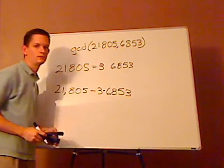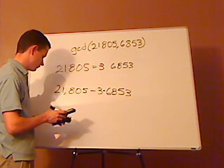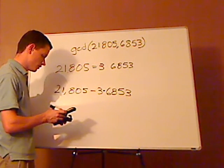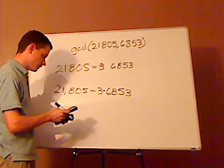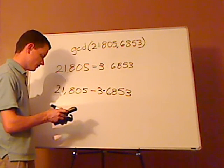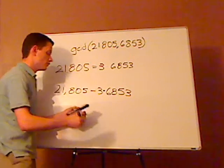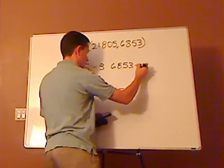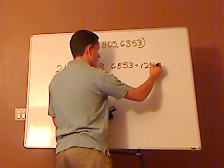So you type that in, so that would be 21,805 minus three times 6,853. When you do that, the remainder turns out to be 1,246.